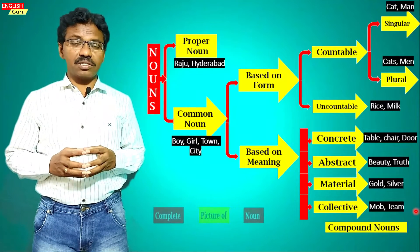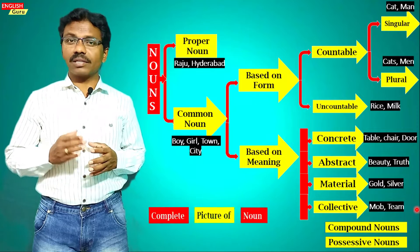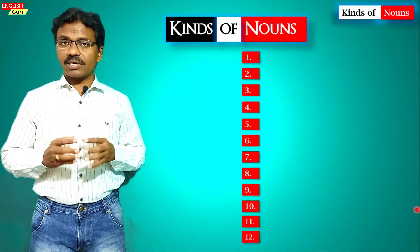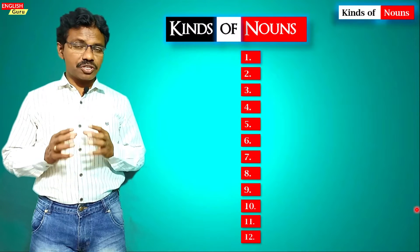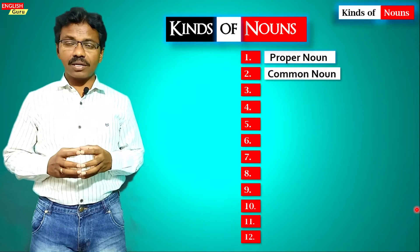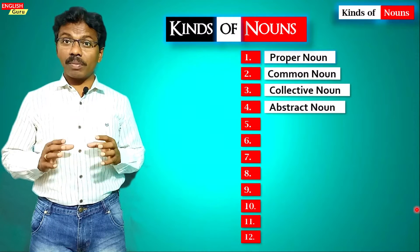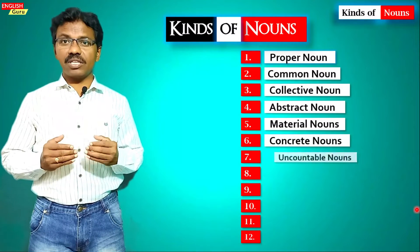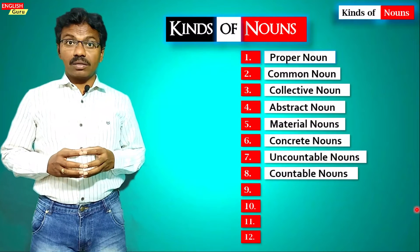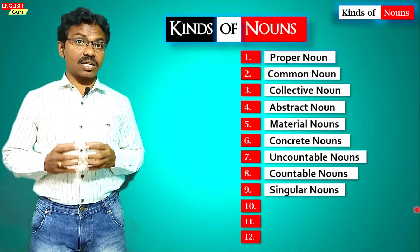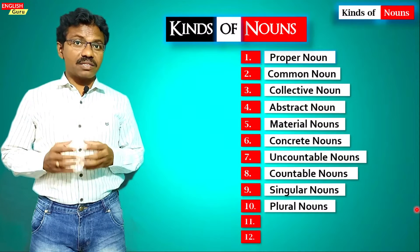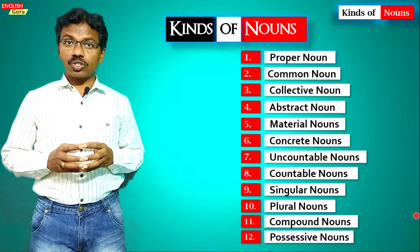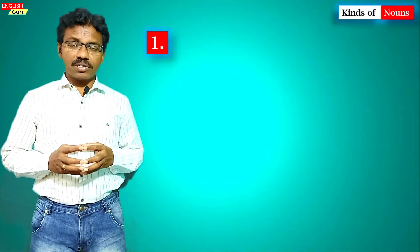Apart from these divisions, there are two other kinds of nouns: compound nouns and possessive nouns. For easy understanding, English nouns can be grouped into 12 categories: proper noun, common noun, collective noun, abstract noun, material noun, concrete noun, uncountable noun, countable noun, singular noun, plural noun, compound noun, and possessive noun.